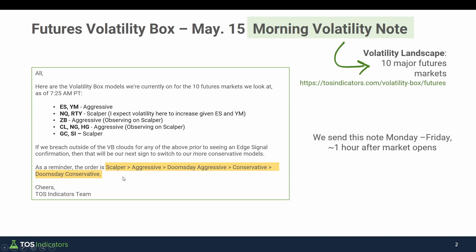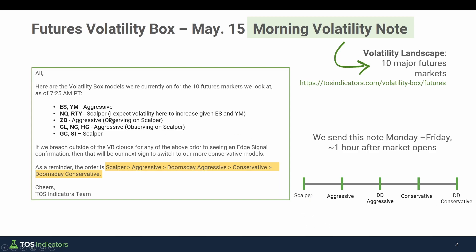The best way to see this ranking is visualized. Here's a line graph with the models in order. The idea is if a market you see is on the scalper volatility box model, that means very little volatility so far to start off the day, and we can continue to look for scalp trade opportunities.